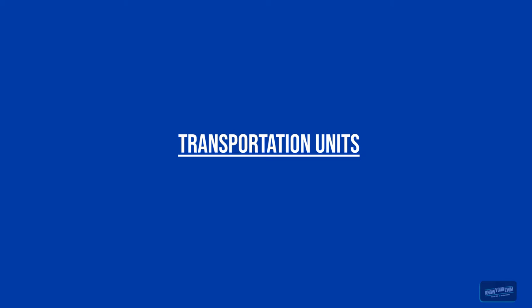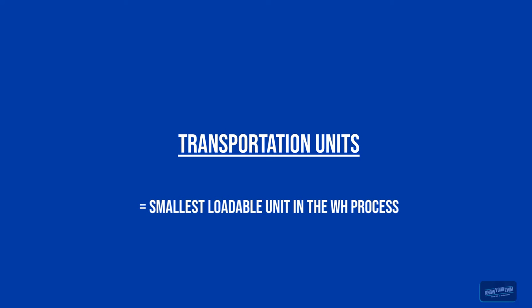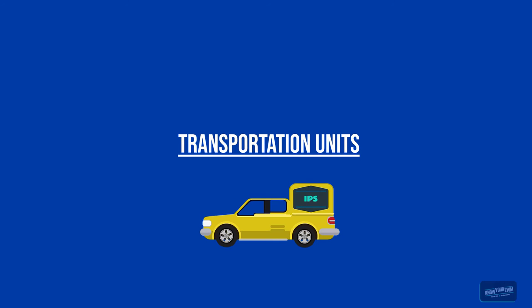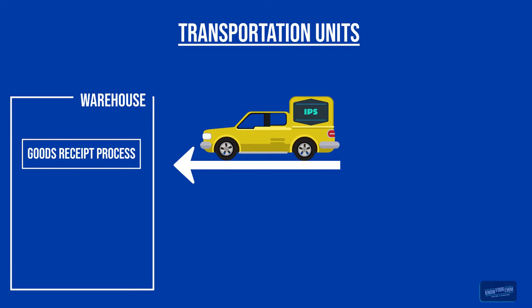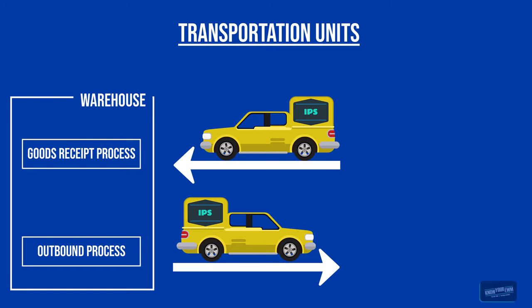SAP defines the transportation unit as the smallest loadable unit in the warehouse process. The most common usage for transportation units is to create a physical copy of the truck. You can use transportation units in the goods received process, like a truck delivering goods to the warehouse, and you can use it in the outbound process, like when a truck picks up the goods and delivers them to the different customers.